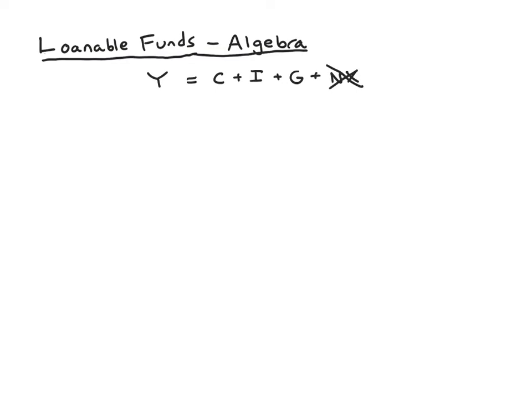The starting point for the loanable funds model was to basically just reinterpret this equation. We're going to move some stuff to the left-hand side, leave investment on the right-hand side, and reinterpret the equation. So let's subtract C and G from both sides and that leaves just investment on the right side. We call this Y minus C minus G saving. As you remember, it's really composed of two parts, public saving and private saving, but here we've added the two together and we just have national saving.